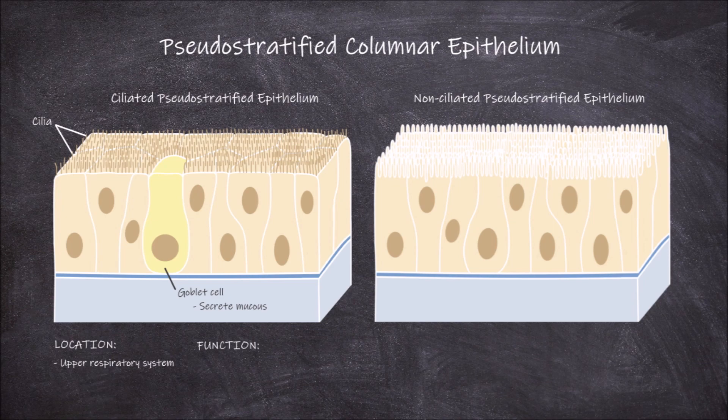The ciliated cells function in moving mucus and foreign substances out towards the throat. Non-ciliated pseudostratified columnar epithelium have stereocilia on the apical surface of the cells instead of cilia. Stereocilia are non-motile protrusions. They are different to both cilia and microvilli, but are more closely related to microvilli. The importance of stereocilia is similar to that of microvilli in that they increase the surface area of the cell.